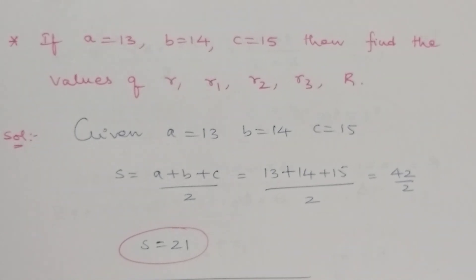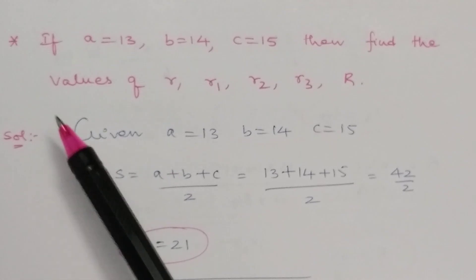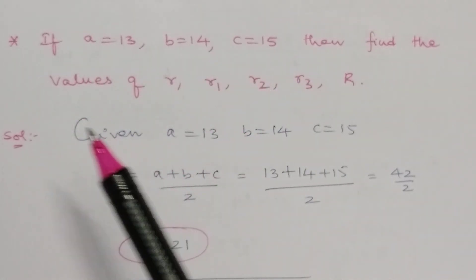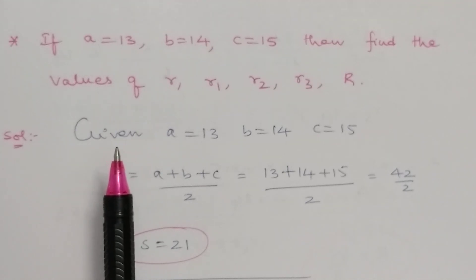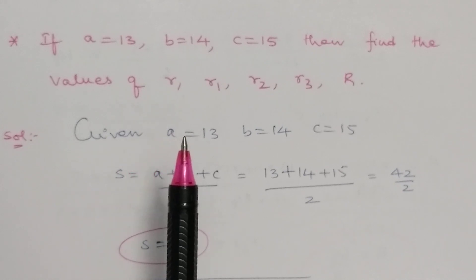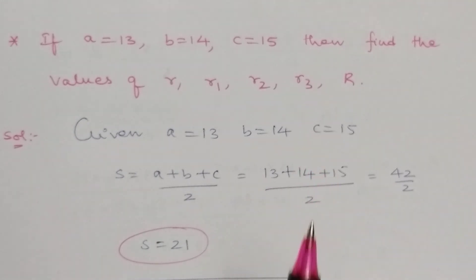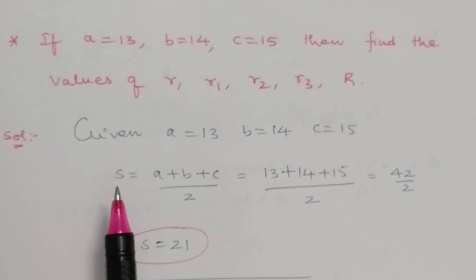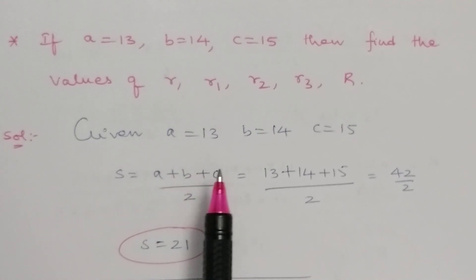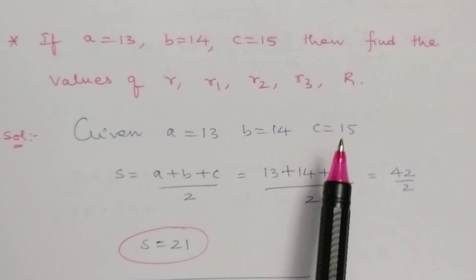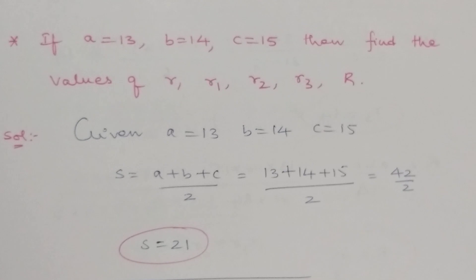Let us do the problem. The sides a, b, c are given and we need to find r, r1, r2, r3 and capital R. Given: a = 13, b = 14, c = 15. First of all, we need to find S, the semi-perimeter: S = (a + b + c) / 2 = (13 + 14 + 15) / 2 = 42 / 2 = 21. So S equals 21.